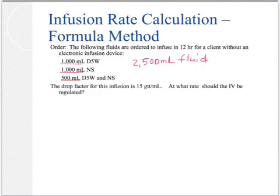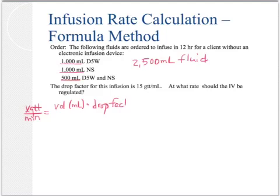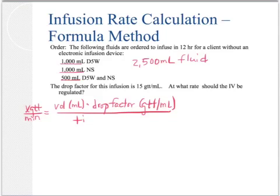To use the formula method, we simply need to recall the formula. The formula is: x drops per minute = (volume in milliliters × drop factor in drops per milliliter) ÷ time in minutes.